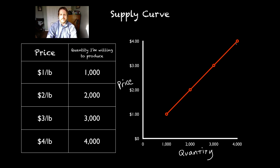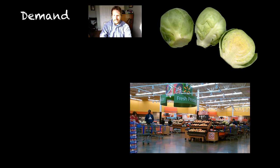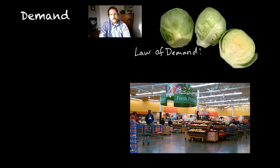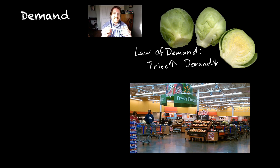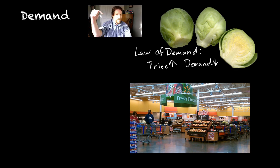Supply is one half of the equation. Let's look at the other half — what people are willing to buy, or the demand. There's also a law of demand. The law of demand states that as the price of a good goes up, the demand — the amount of people willing to purchase that item — goes down. If you think about something you want to buy, like a pencil, you might be willing to buy it for 50 cents, but if the price goes up to a couple of dollars, you're going to look at it and say it's not really worth that. As the price goes up, the quantity that people are willing to buy goes down.